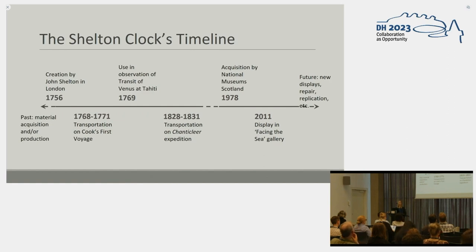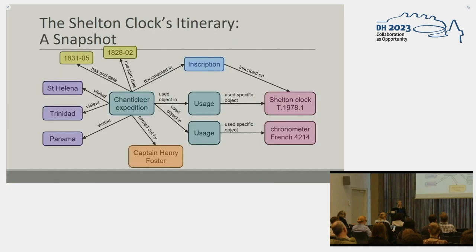Using the information provided in the NMS catalogue and the House and Hutchinson article, we've produced a simplified timeline of some key events in the Shelton clock's itinerary. This timeline shows various events in which the Shelton clock was used, notably including Cook's first voyage, which is ostensibly to observe the 1769 transit of Venus from Tahiti, but which ultimately opened the door for the colonisation of Australia by performing the first detailed survey of the region. Towards the end of the timeline, I have included the clock's acquisition by National Museum Scotland, signifying its transition from a working scientific instrument to an exhibited object. Using this timeline and the SIMION ontology, we can model various events in the Shelton clock's itinerary. This particular event is the voyage of the Chanticleer, which surveyed multiple locations in the Pacific Ocean, including many British colonies, and it took place between 1828 and 1831. The Shelton clock's use in this expedition is documented in an inscription that appears on its hour disk.